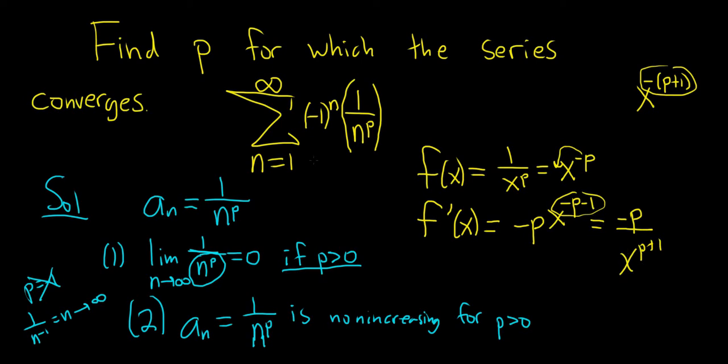And x here is bigger than 1, because n starts at 1, so we can consider only values of x greater than or equal to 1. And so as long as p is positive, this bottom piece here is positive, there's no issues. And if p is positive, negative p is negative. So this will be less than 0. So f is decreasing.